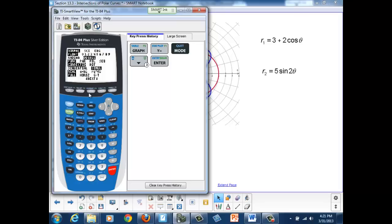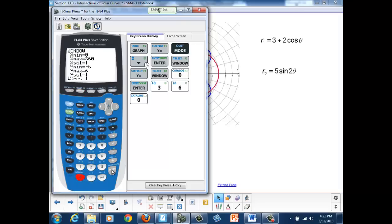I'm going to go and change my window because now I don't want to go from negative six to six because my input variable theta has become x. So, since my theta value went from zero to 360, now my x value needs to go from zero to 360. I'm going to change this to zero to 360. And let's make our scale 30 degrees. And our y value from negative six to six should still be fine.